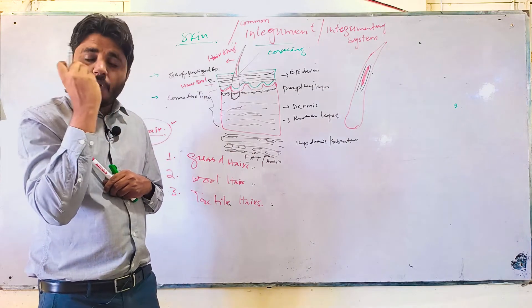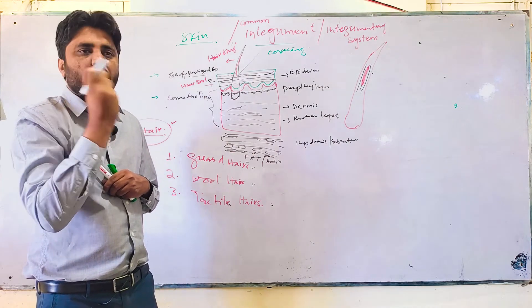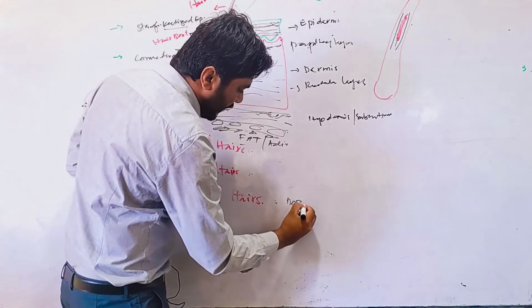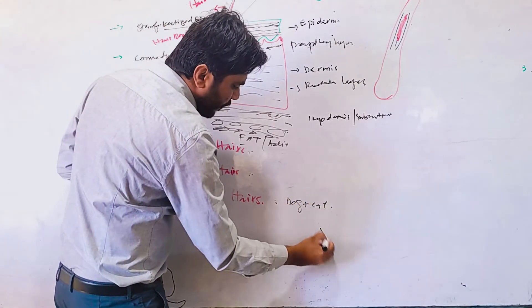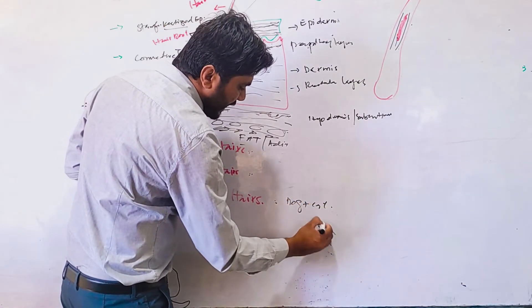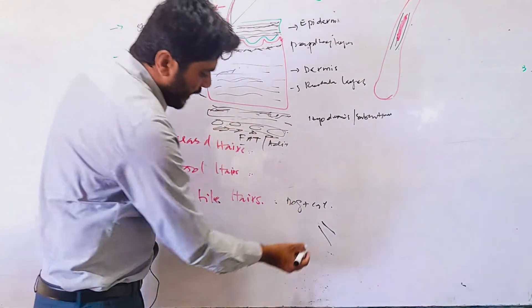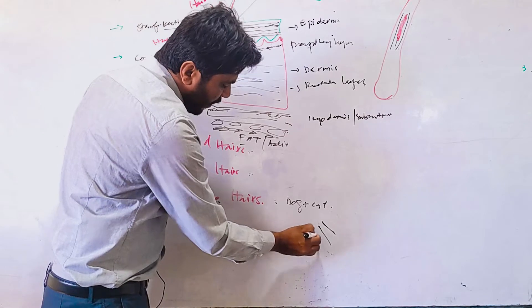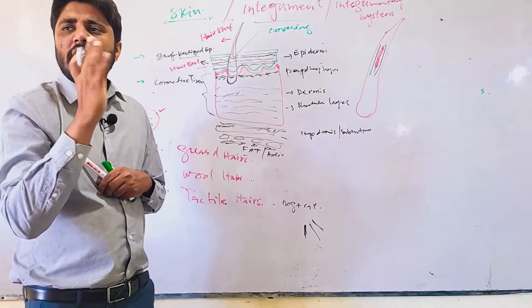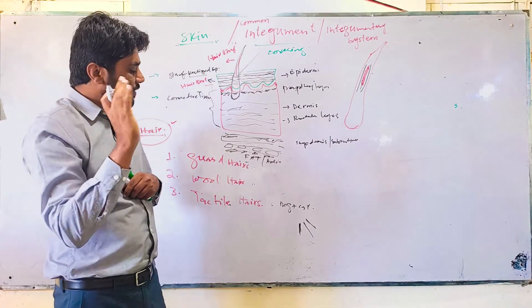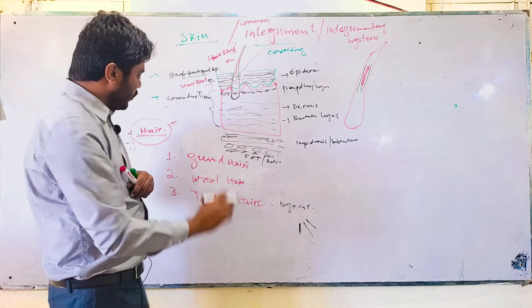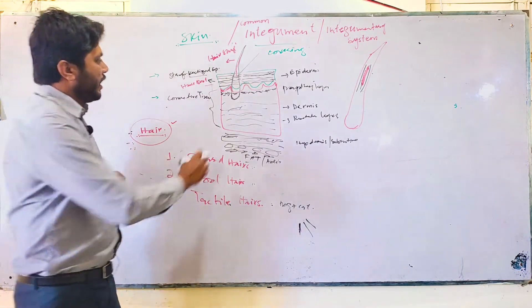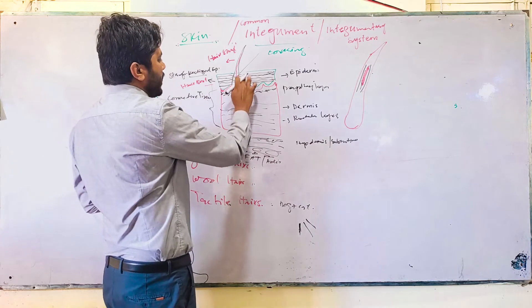Coil hairs are found around the eyes and nasal areas, especially in dogs and cats. They are separate, single, and somewhat erectile-type hairs present around the nasal cavity of dogs and cats. So these are three different types of hair.